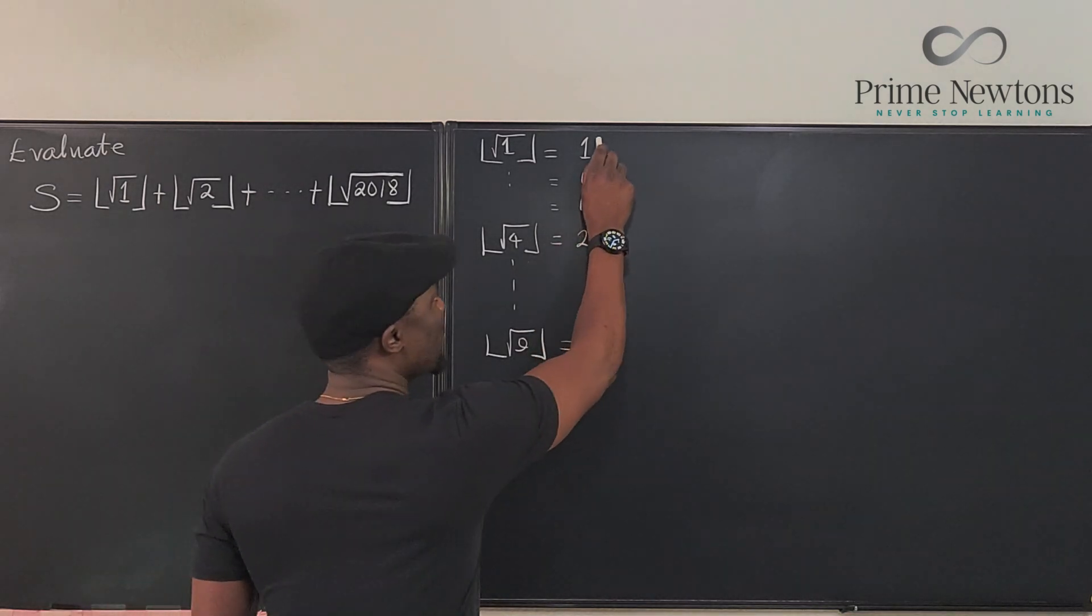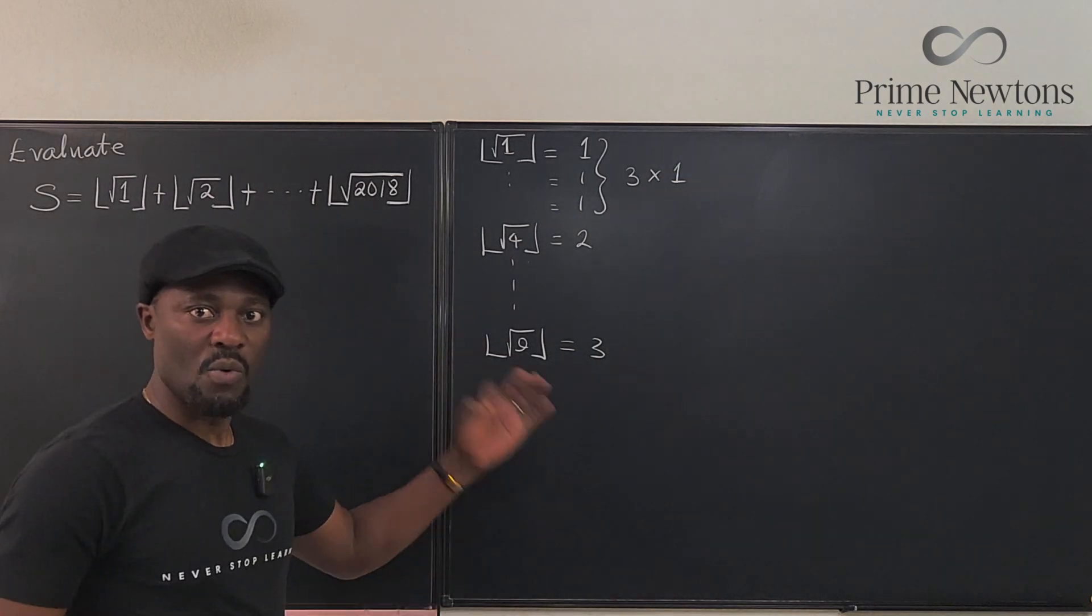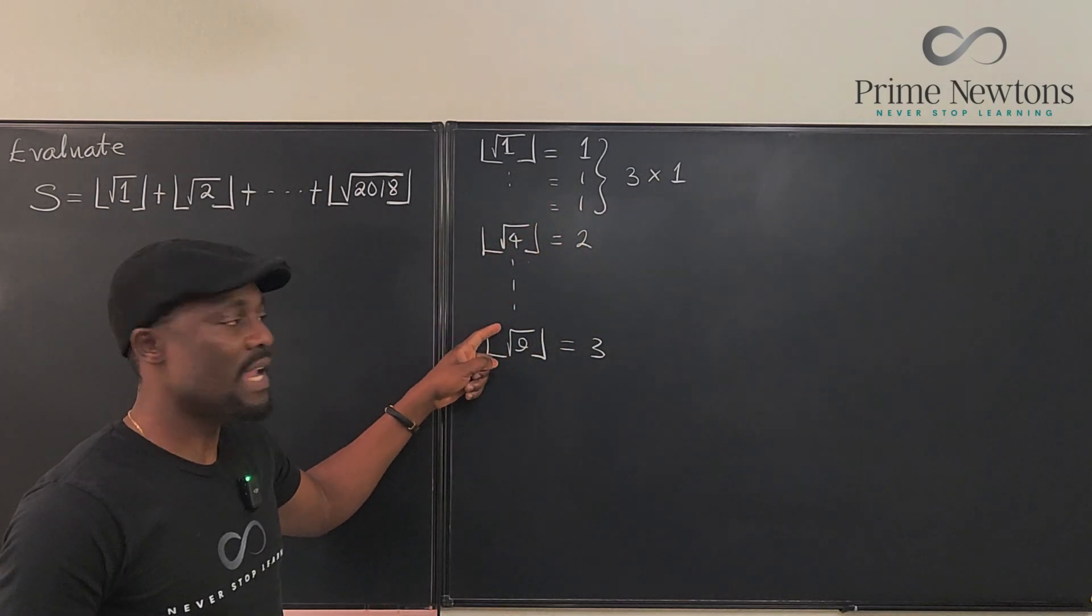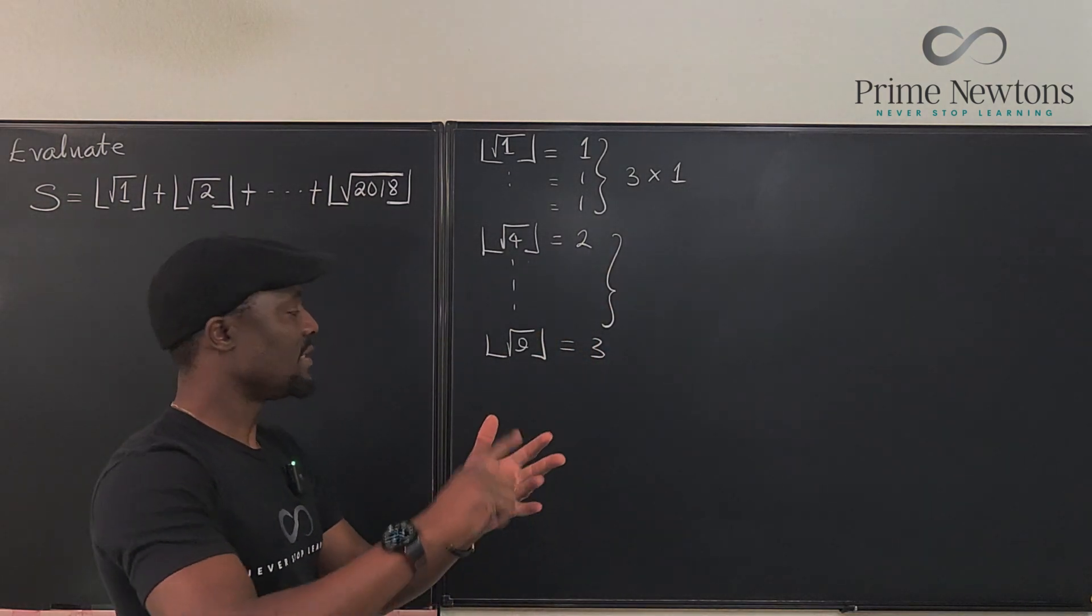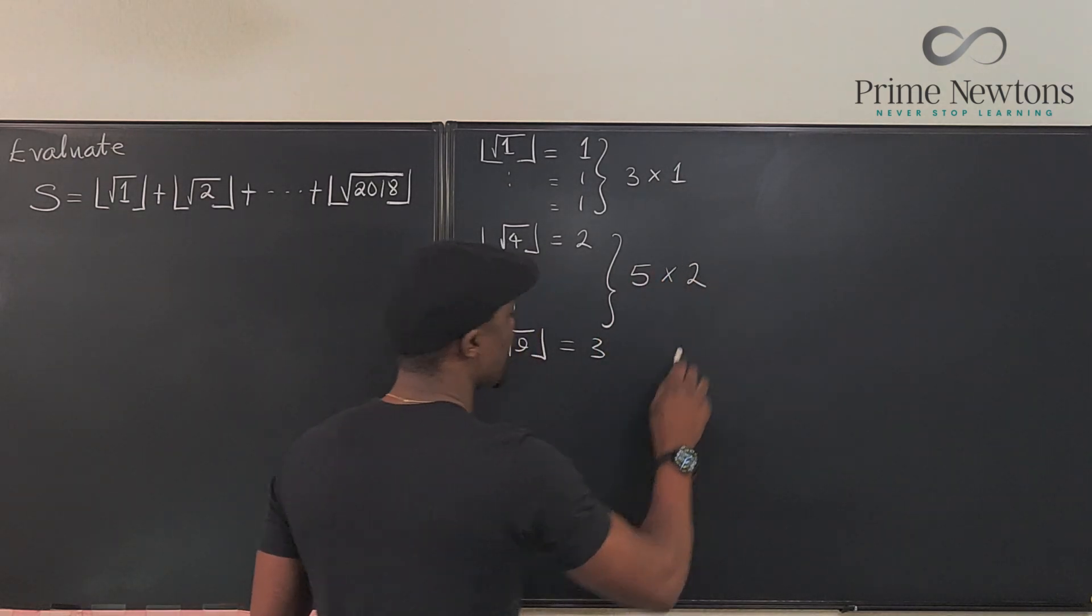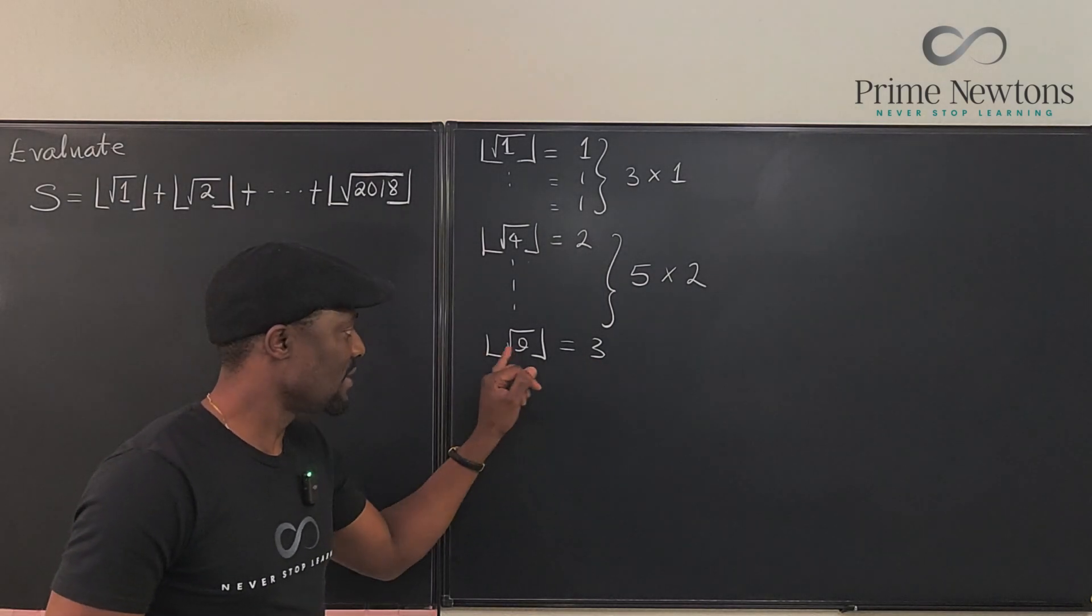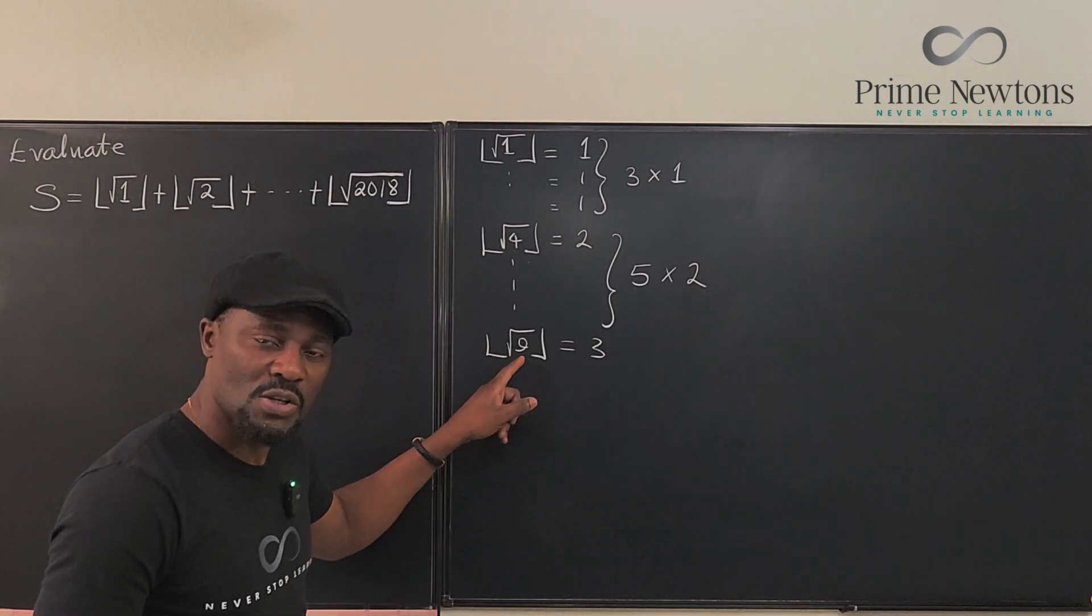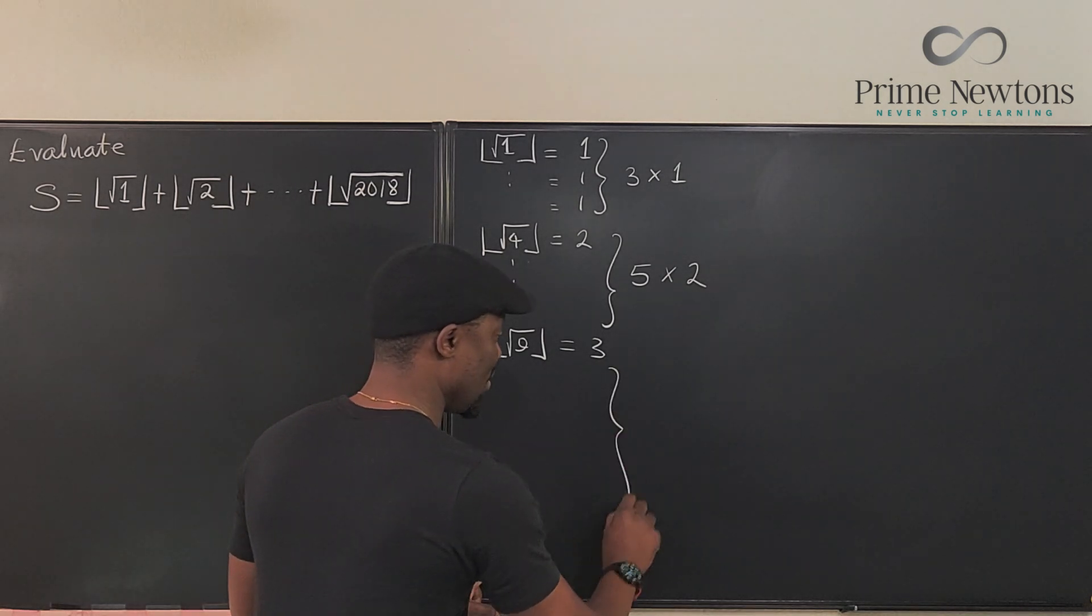You can actually build a pattern that the floor of the square root of 1 is just 1, and this will remain the same equals 1 until you get to the floor of the square root of 4, and then you get 2. This continues until you get to the next perfect square, which is 9, and you get 3. Notice that you have 3 numbers whose floors were each 1. So the floor of numbers 1, 2, 3 was 1. The floor of numbers 4, 5, 6, 7, 8 was 2. That's five of them.